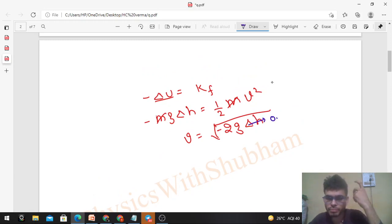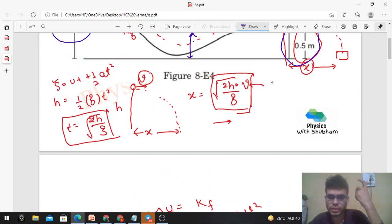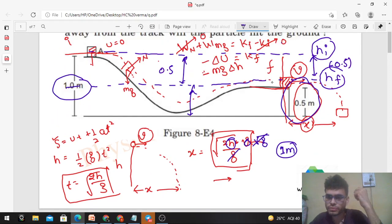What will be the value of x? Put v = √g into the formula. h is 0.5, so x = √g × √(2×0.5/g) = √1 = 1 meter. So the particle will hit the ground at a distance 1 meter from the end of the track.